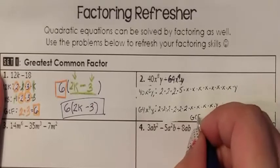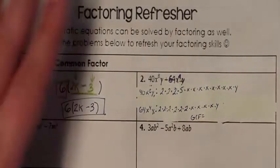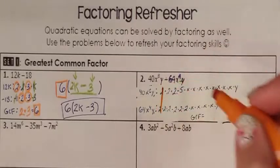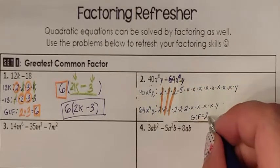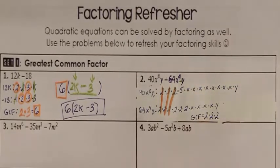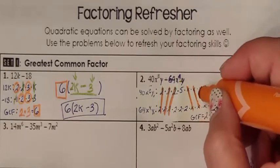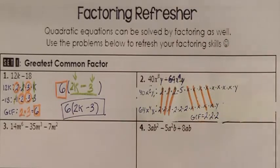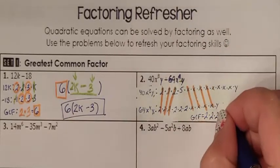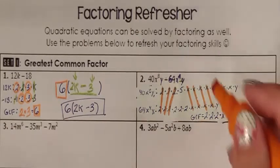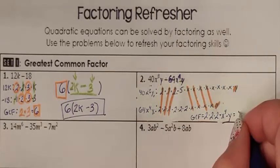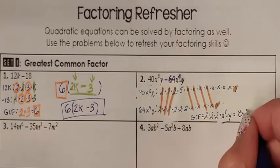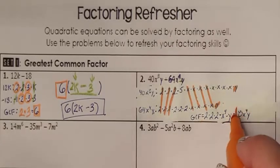Looking for my GCF — what do we have in common? I see 3 groups of 2 in common. I see 4 groups of X in common; if I have 4 groups of X in common, you write that as X to the 4th. And I see 1 group of Y in common, so I have 1 Y. So 2 times 2 times 2 is 8 times X to the 4th Y — this is my GCF.